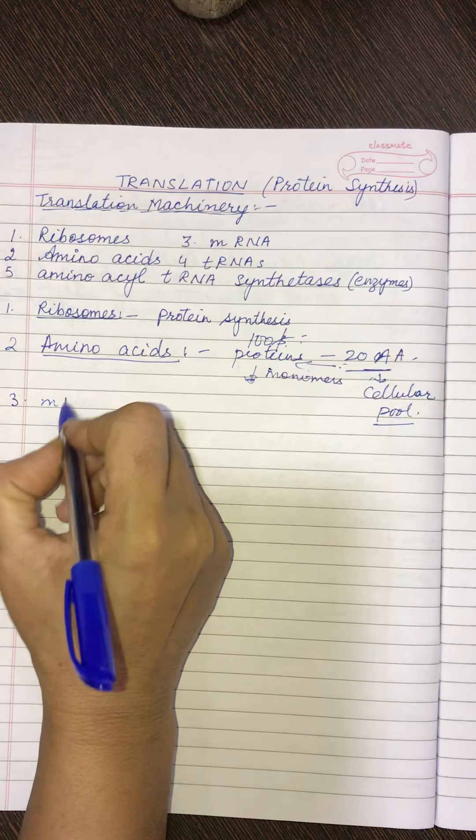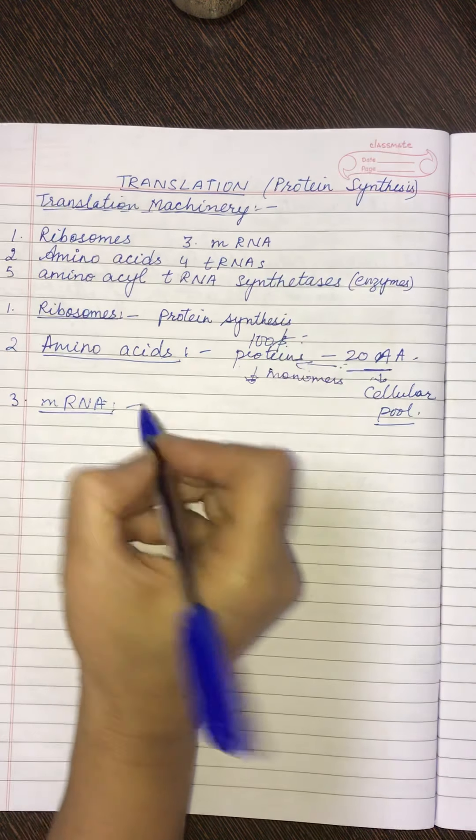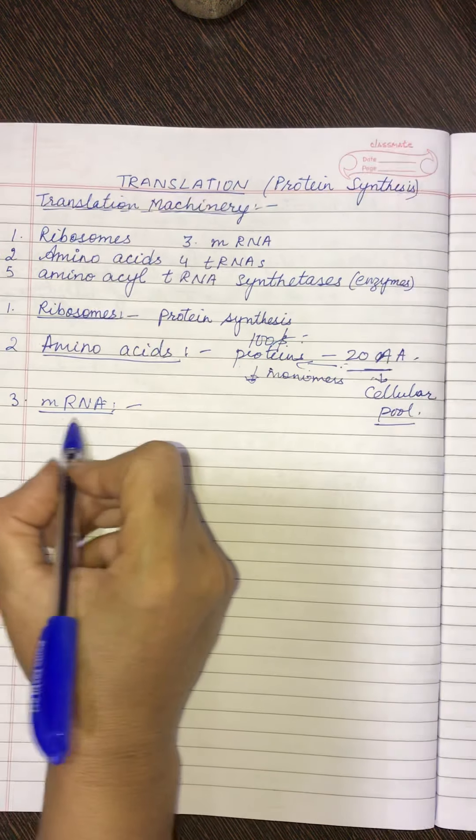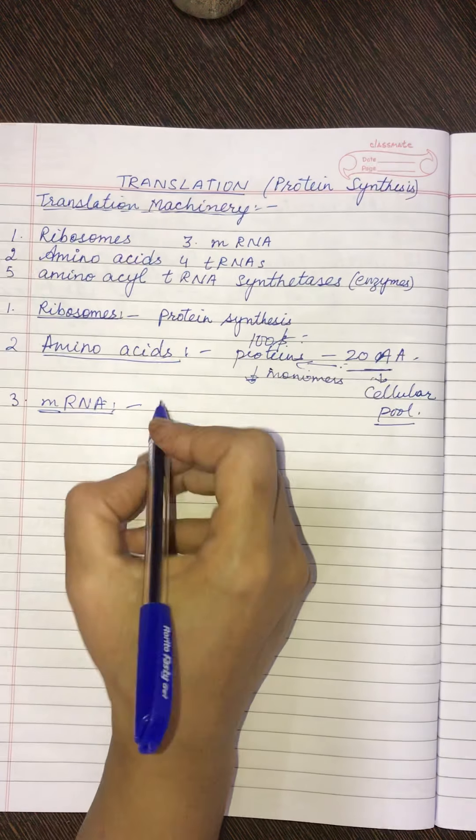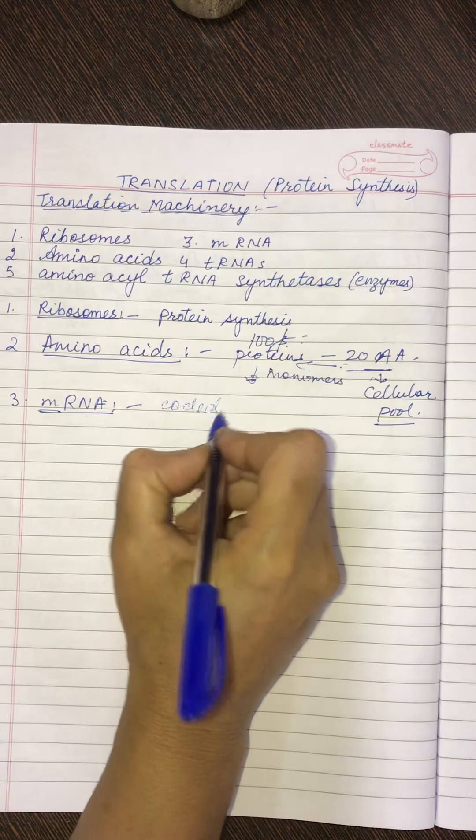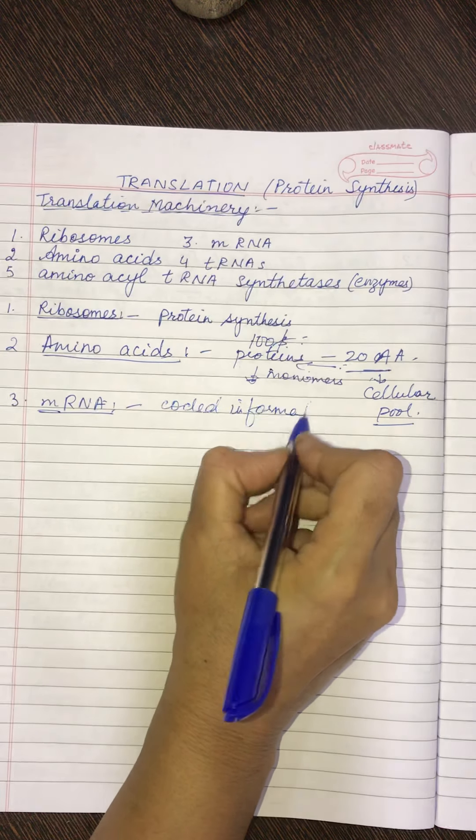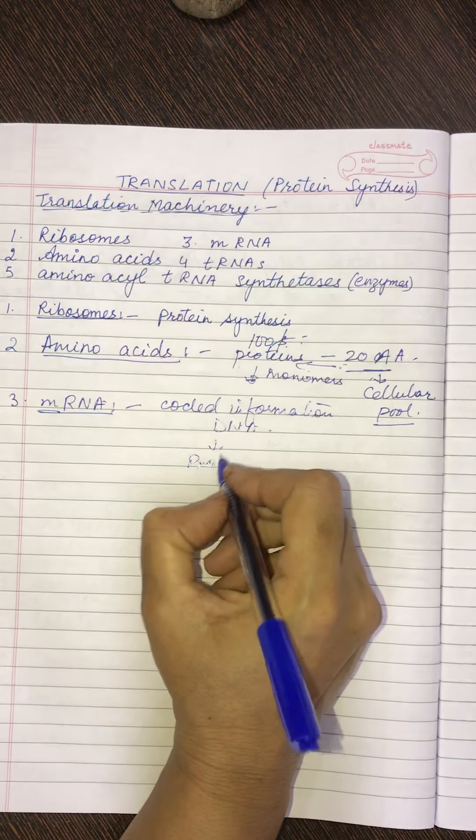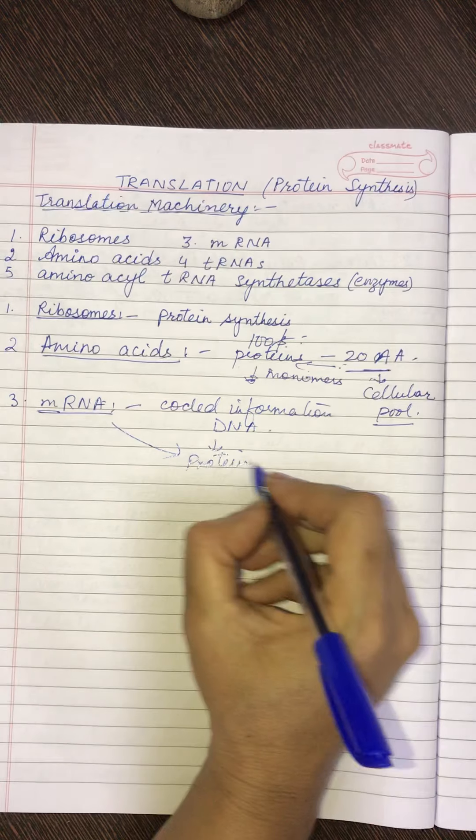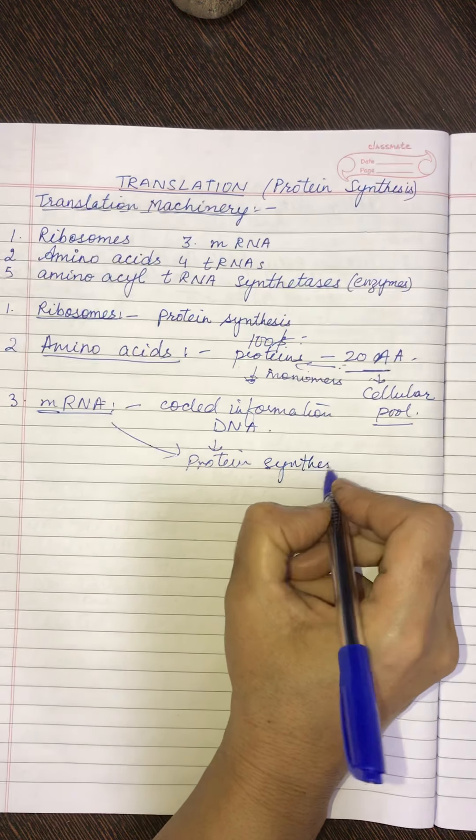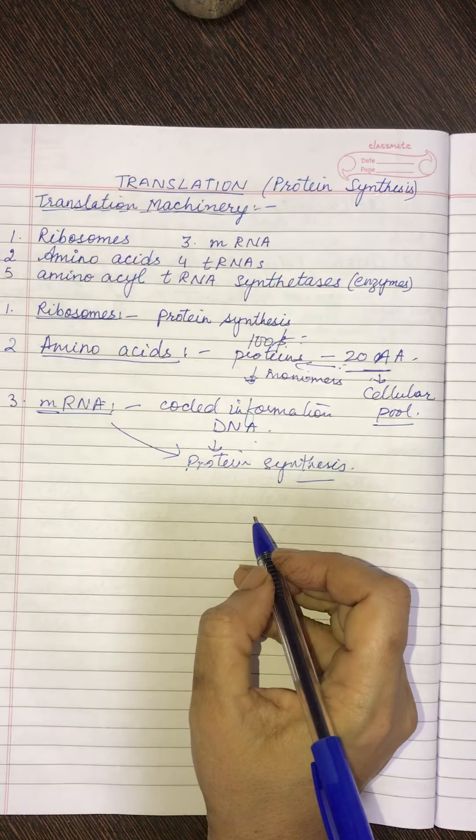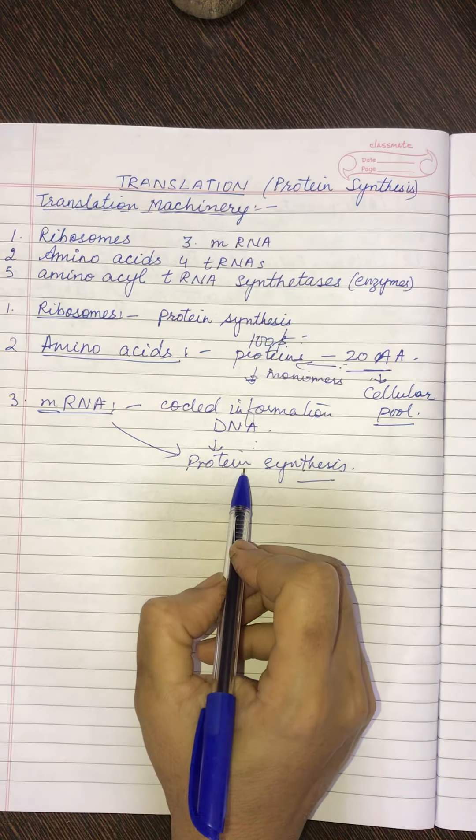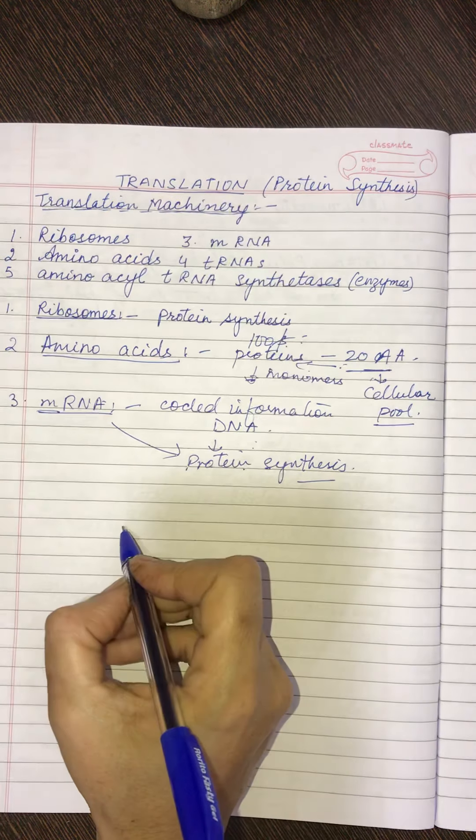Now, number third, children, it is the mRNA. I have explained you earlier also in the previous video, the structure of the mRNA. Now, again, you know that as the name is there, it is a messenger RNA. It brings the coded information. It brings the coded information from DNA. According to that, whatever information is given by the DNA, according to that, that very proteins are formed.